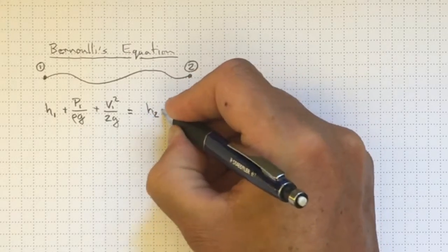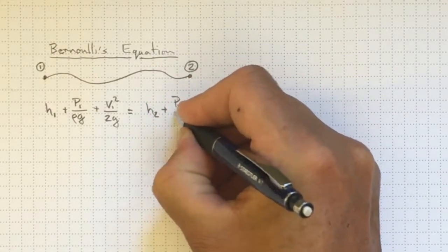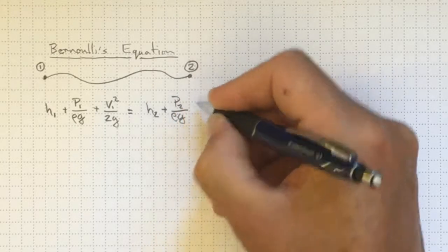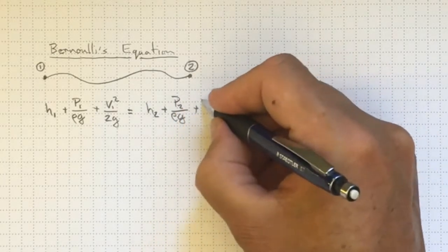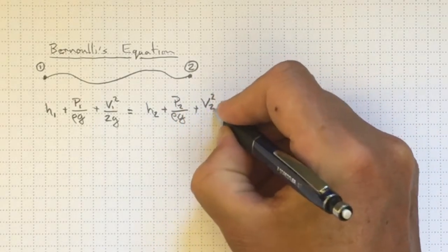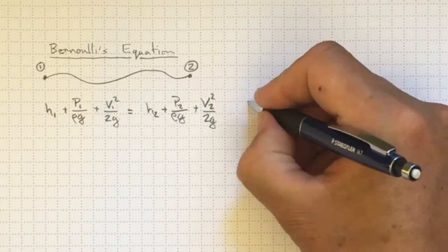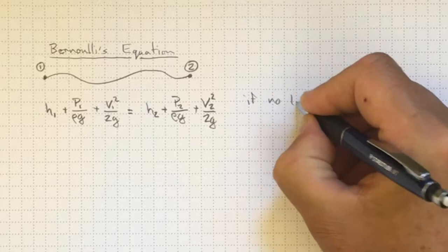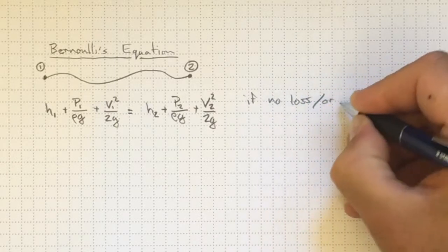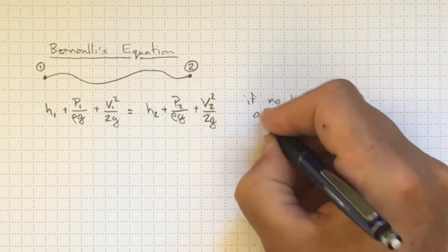So potential energy of elevation, potential energy of pressure at 2, kinetic energy with its velocity squared at 2. And that's going to be true if there is no loss or gain of energy.